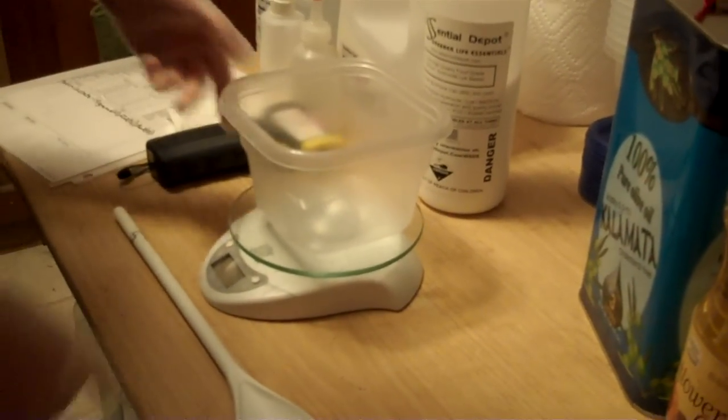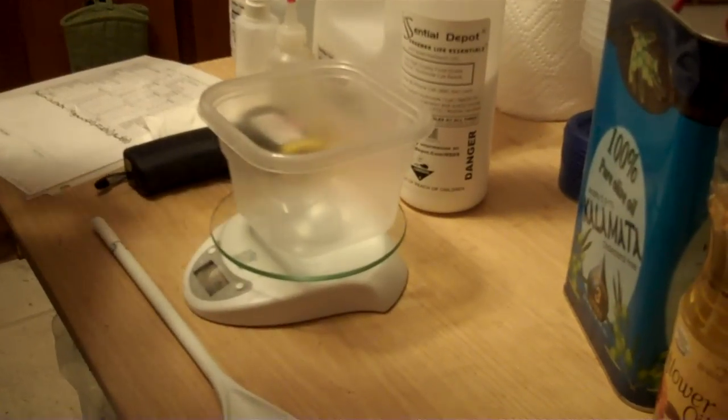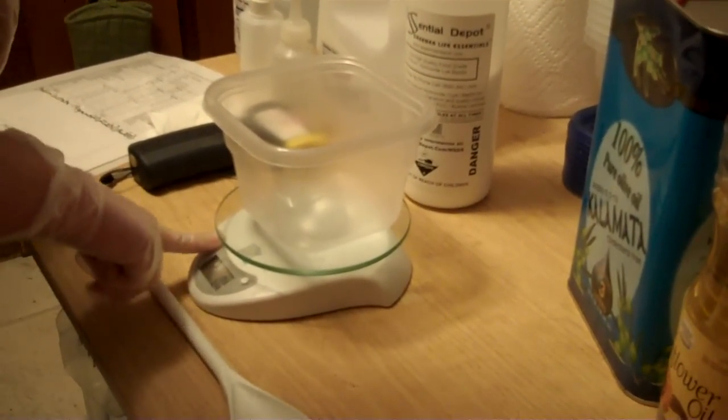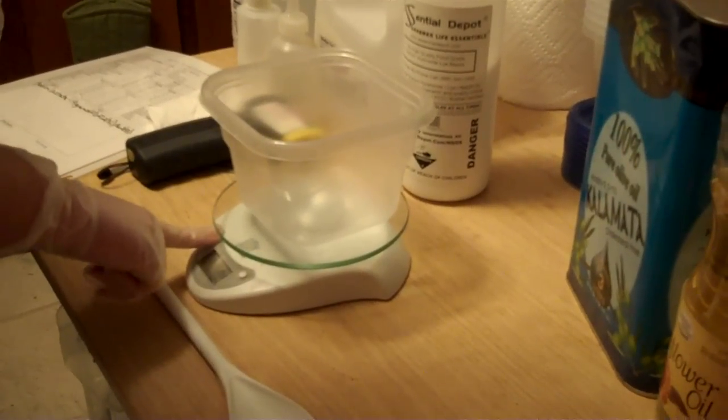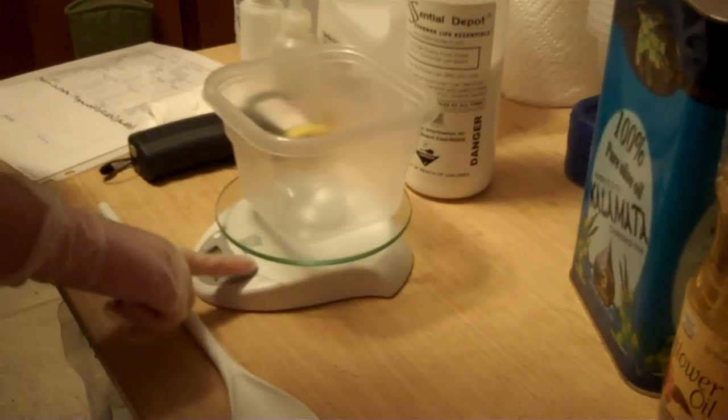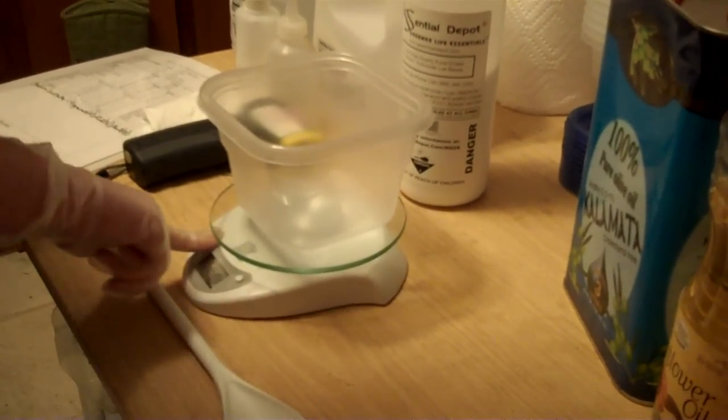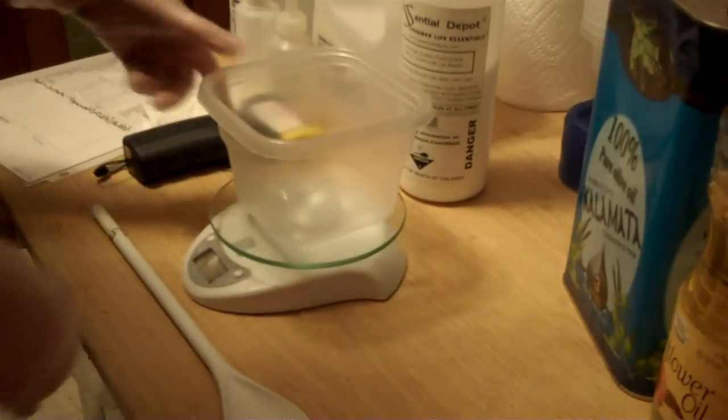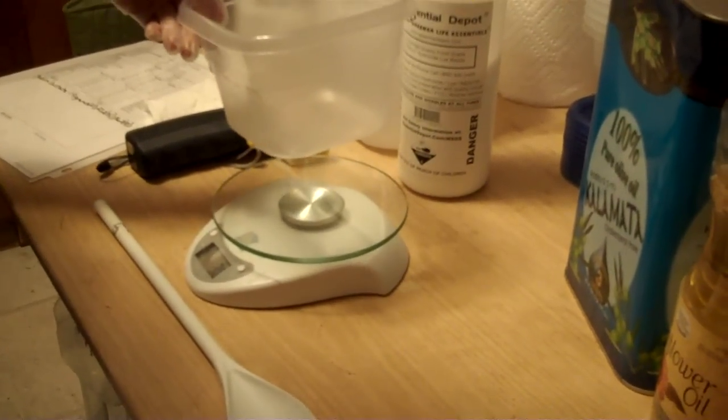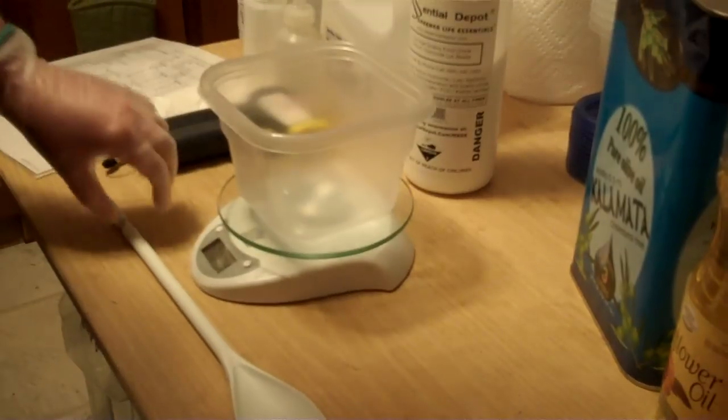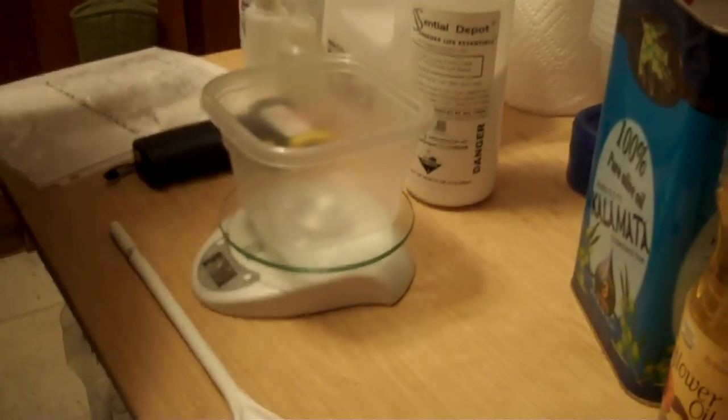So to start, I will go ahead and put my container on my scale. This is a battery-powered one, so as long as you have batteries, you should be all set. I'm going to go ahead and switch it over to grams because grams is more accurate. There we go. Make sure that you tare out the amount of the container so that you're getting the most accurate you can.